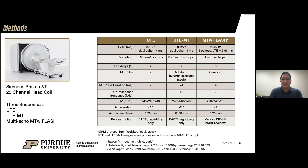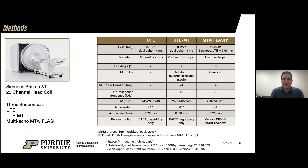We scanned a couple of volunteers on our Siemens Prisma 3T scanner with a 20-channel head coil using three different sequences: the UTE sequence, which is dual echo with the first echo at 20 microseconds and the second echo at about four milliseconds; the UTE-MT, which included an MT pulse using adiabatic hyperbolic secant pulses; and a conventional vendor sequence — Siemens 3D FLASH — that was MT-weighted. We followed a protocol that has been established for a long time.